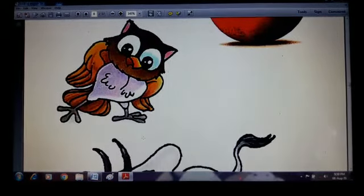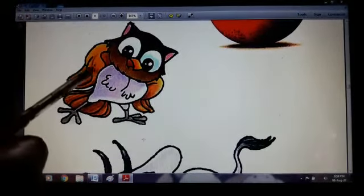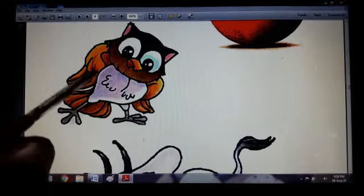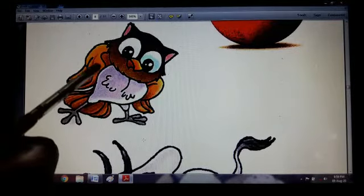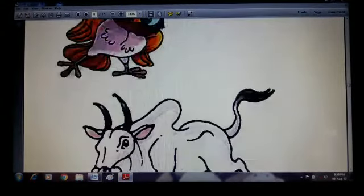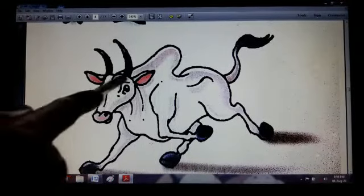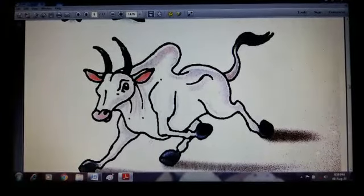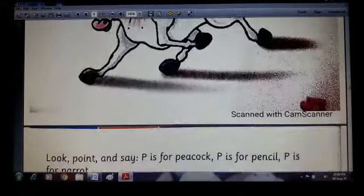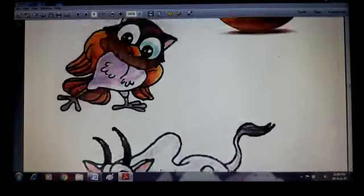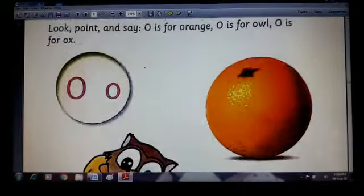Next one is owl. O is for owl, O-W-L owl. Now next one is O is for ox, O-X ox. You have to write these three words and identify the pictures and the objects also.